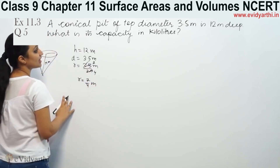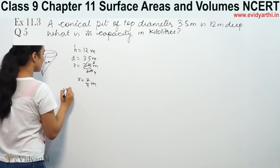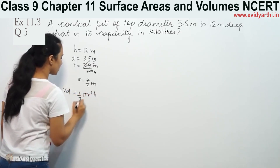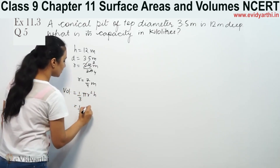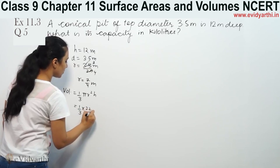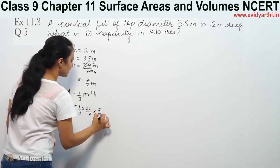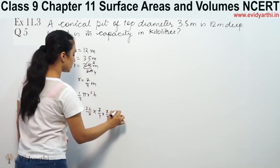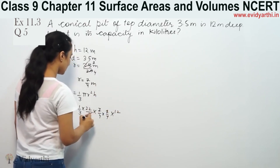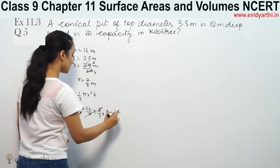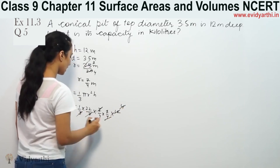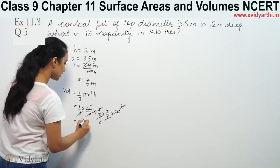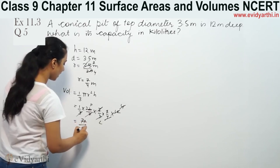So we find capacity in kiloliters. The volume is equal to 1 by 3 times pi times r squared times h. So that is 1 by 3 into 22 by 7 into 7 by 4 into 7 by 4 into height 12. Cancelling 7 with 7, 3 with 12, and 4 with 4, we get 77 by 2.